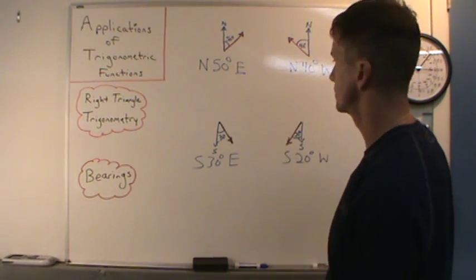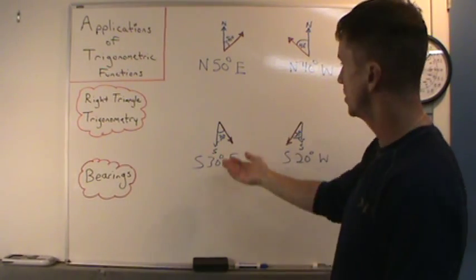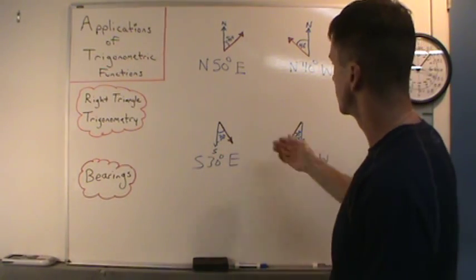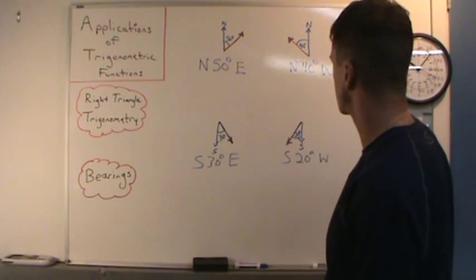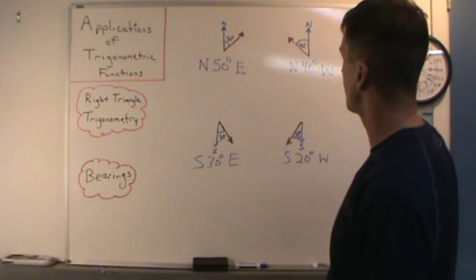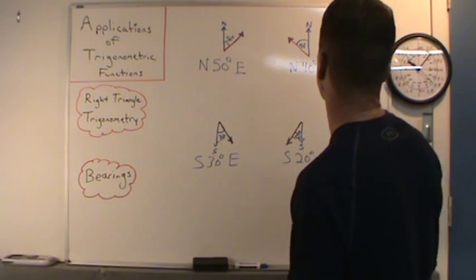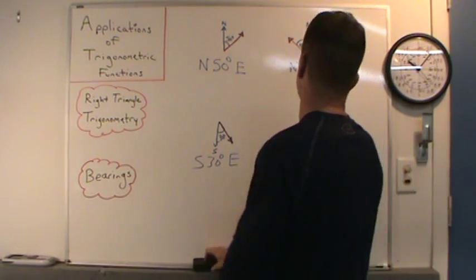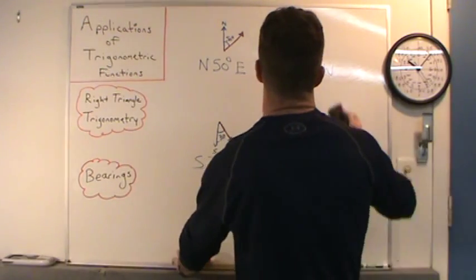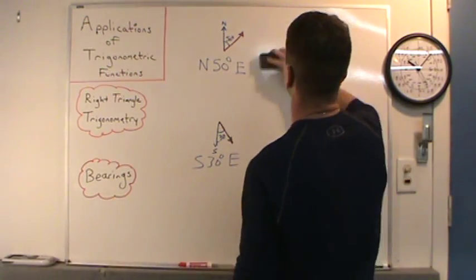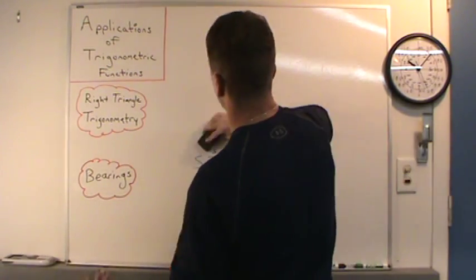These are bearings — they're acute angles, and they indicate that direction. Let's do two application problems that involve bearings.